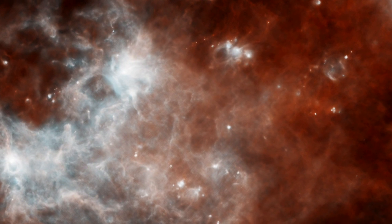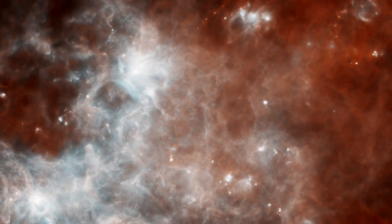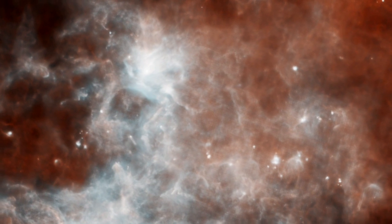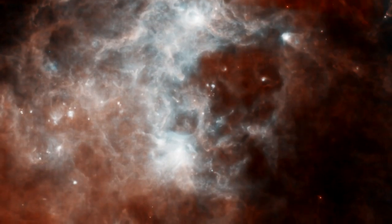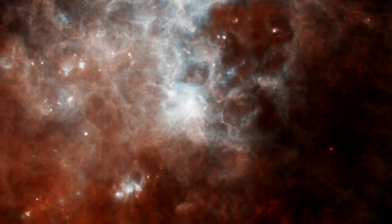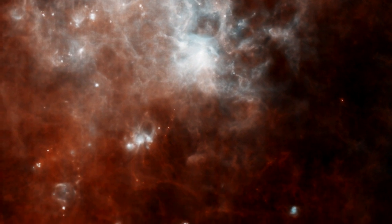This early Herschel observation shows a patch of sky in the constellation Crux. Warm Milky Way dust at a wavelength of 70 microns glows blue, while cooler dust at 160 microns is red.